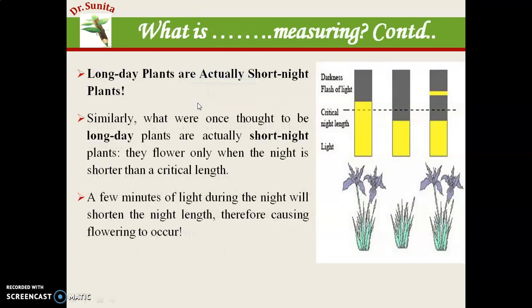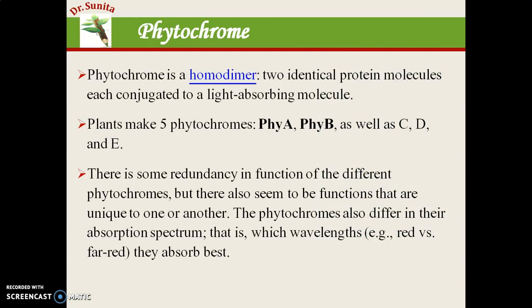Flowering in plants is regulated by the pigment phytochrome. Phytochrome is a homodimer — it is made up of 2 identical protein molecules, each conjugated with a light-absorbing molecule that senses and absorbs light. Plants make 5 phytochromes: phytochrome A, B, C, D, and E. There is some redundancy in their functions, but their main function is absorbing blue light, though they have other functions as well.